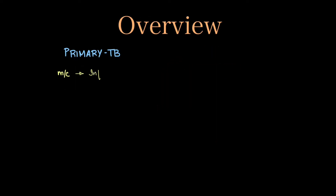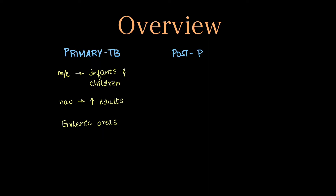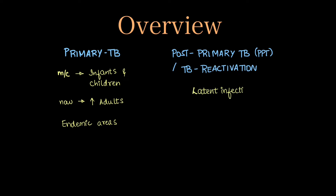In this video we are going to discuss primary tuberculosis, which is more commonly found in infants and children, but nowadays shows increased incidence in adults and is most commonly found in endemic areas. Next is post primary tuberculosis, also known as TB reactivation, which occurs when a latent infection undergoes reactivation or the patient has a reinfection.